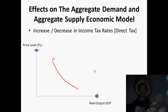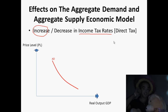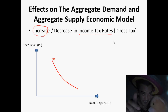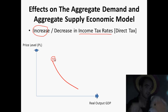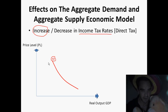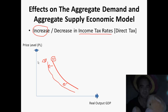What are the effects on the aggregate demand and aggregate supply economic model? Let's take an increase in income tax rates. If our tax rates go up — and remember, income tax is a direct tax — we're going to have less money to spend. A factor of AD is total consumption spending, so we have less money, we're going to spend less, our consumption decreases. So AD is going to shift inward to the left. Make sure you label it AD1 and draw your arrows — easy marks.